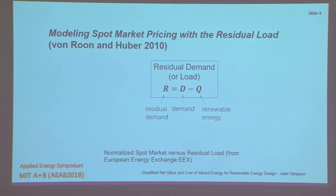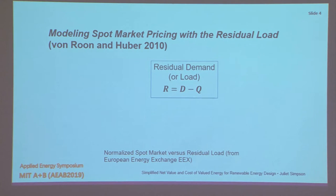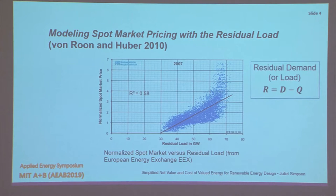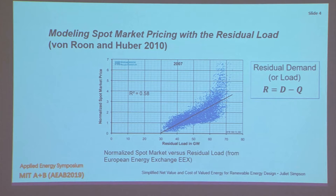The beginning of this research really started with a paper by Von Roon and Hubber looking at modeling spot market pricing with the residual load. For those who don't know, the residual load or residual demand is the demand that's left over once you've taken out renewable energy. They found a linear trend between residual load and normalized spot market prices on the European Energy Exchange, looking at a few different years of data, with R-squared values between about 0.5 and 0.8. If you think about all the different things that go into affecting spot market prices, that's really a fairly high correlation.